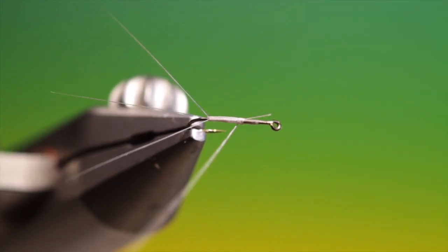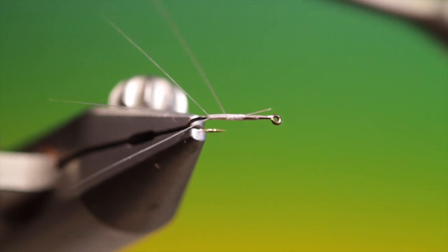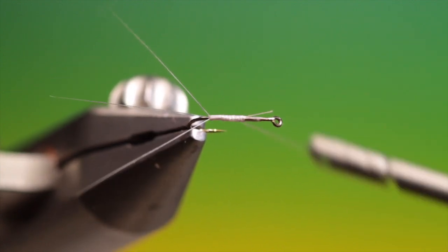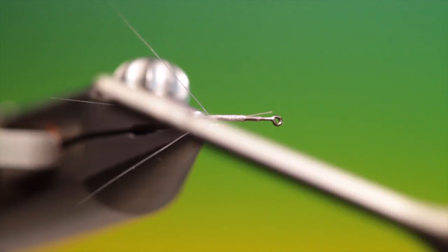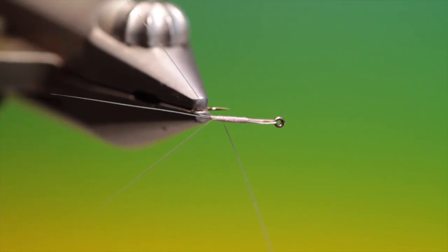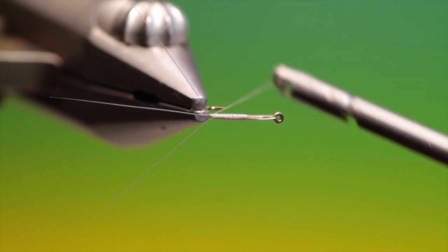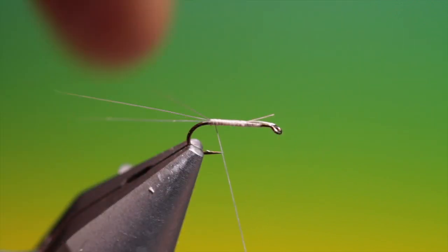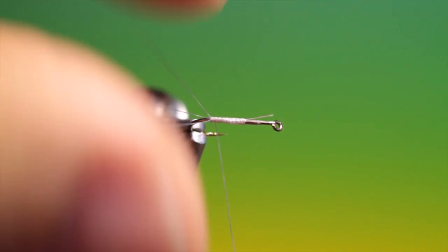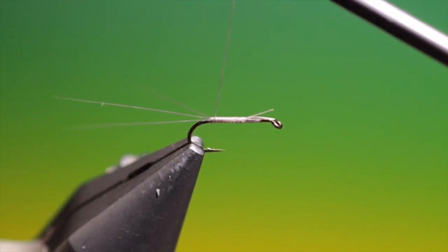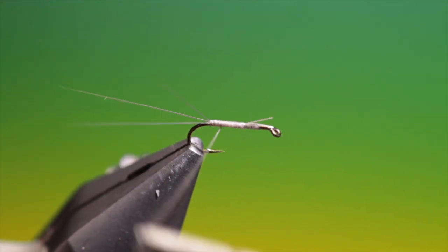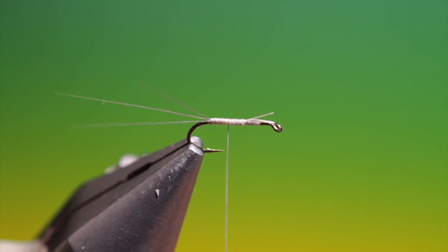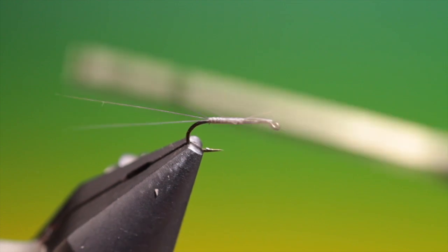And we can go back. And we have our nicely splayed tail. And these won't fall or collapse. So what we want to do now is, I'm going to spin our tying thread. And then we're going to build up this body a little so it gets kind of a short fat taper.